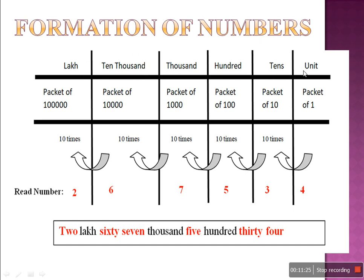Unit place means a packet of one. Ten place means we make packets of ten. In counting: one, two, three, four, five, six, seven, eight, nine — till it is single we put it in the units area. But when it becomes ten, it starts as a packet of ten. Then hundred place is a packet of hundred, thousand place is a packet of thousand, ten thousand place means packet of ten thousand, and lakhs means a packet of lakh. Tenth place is ten times more than unit place.